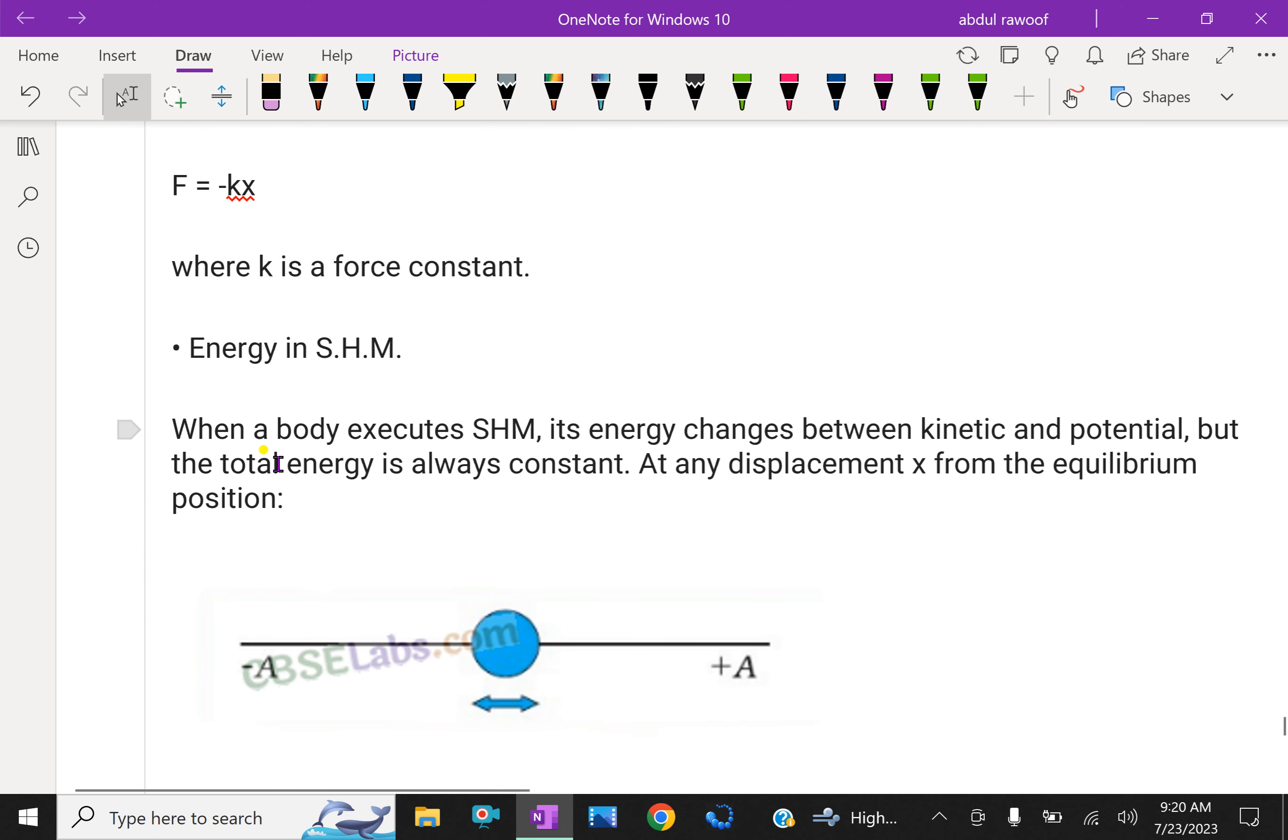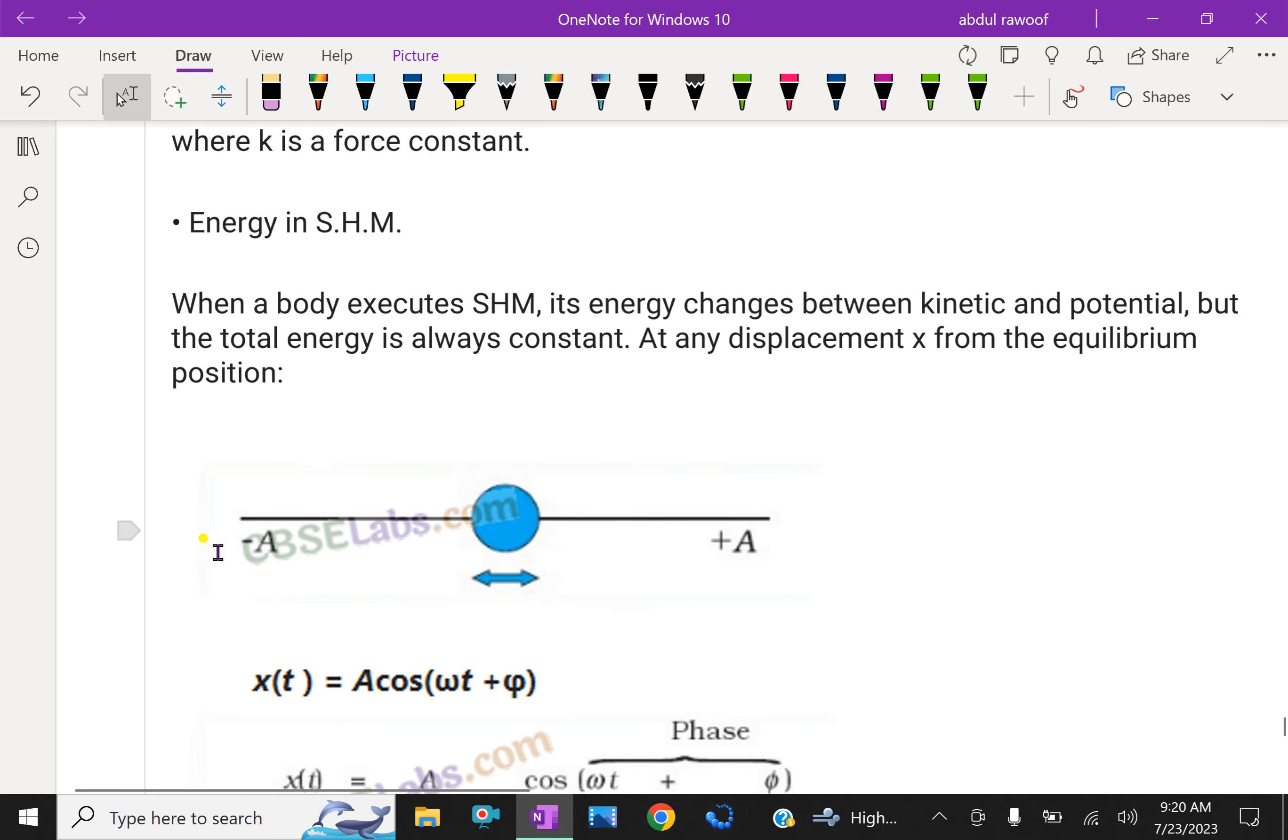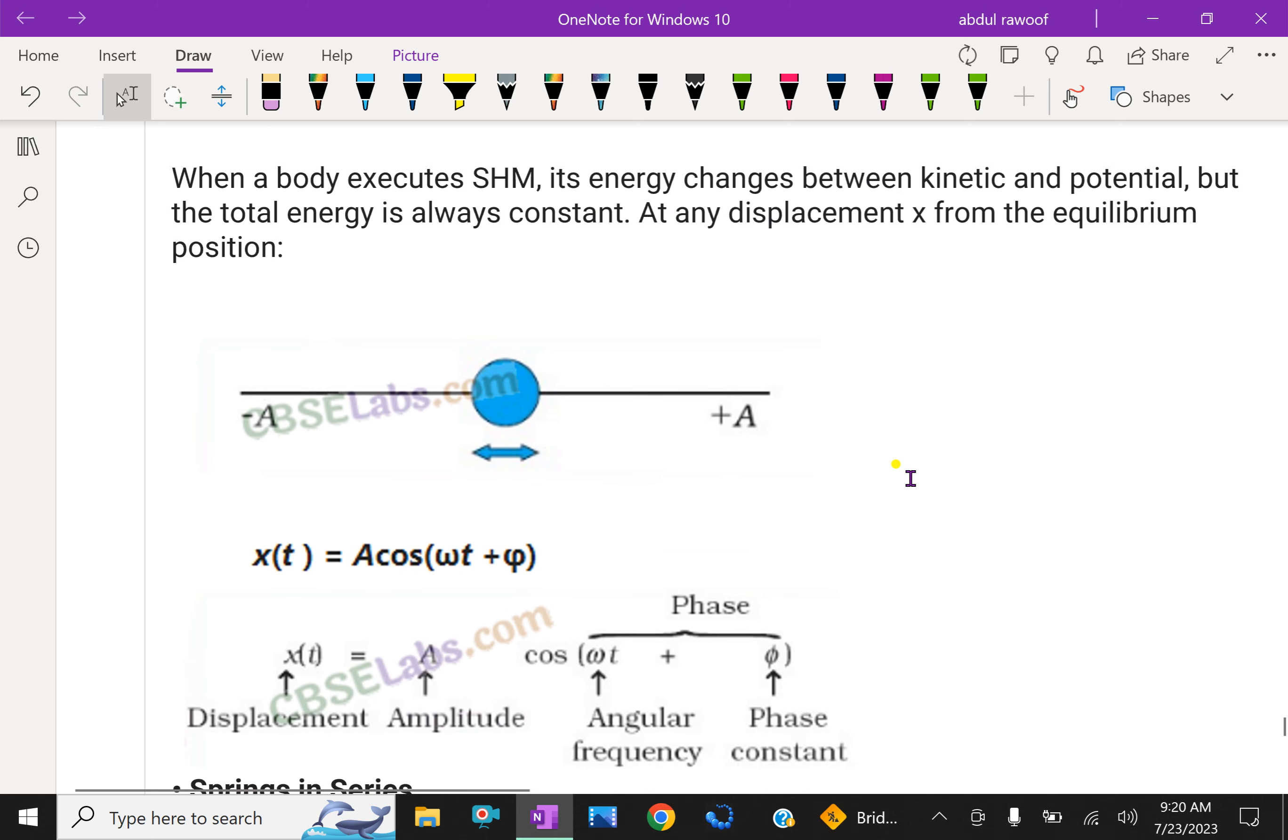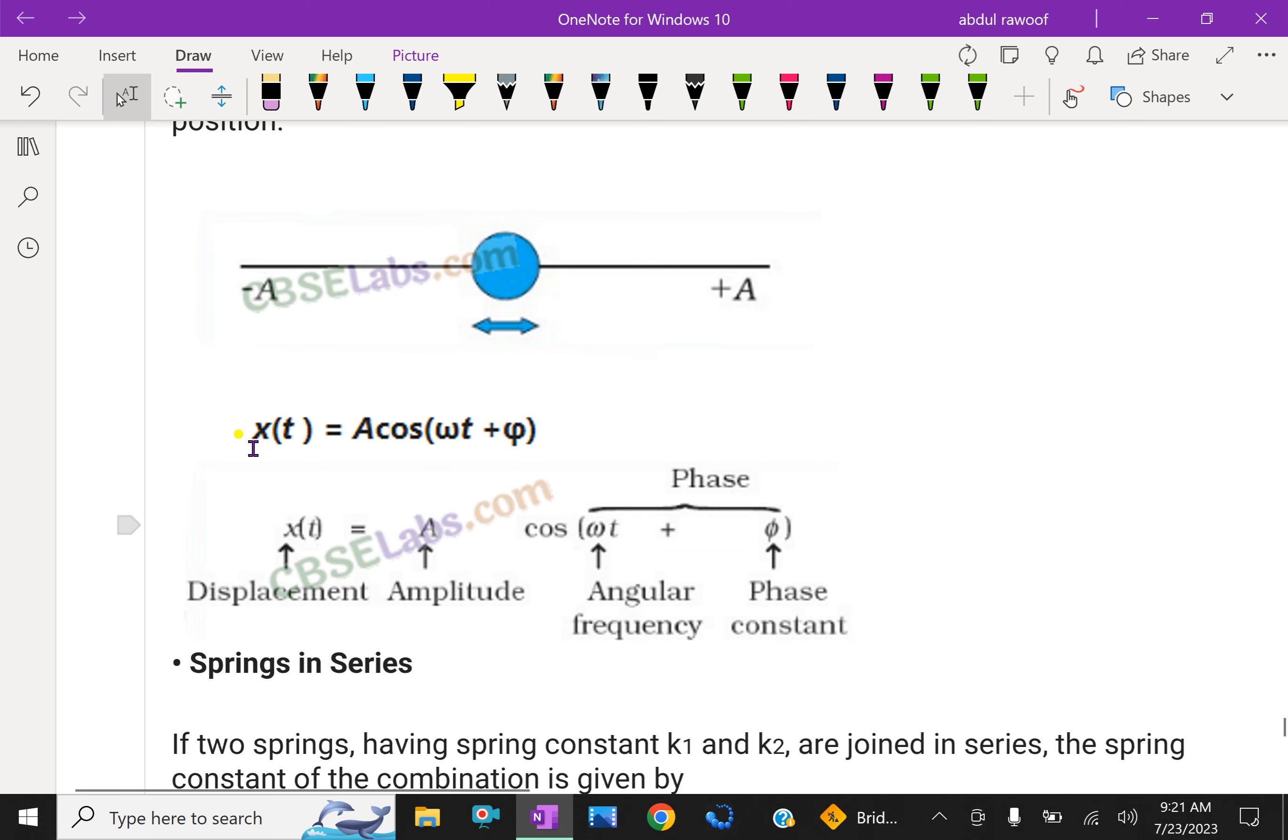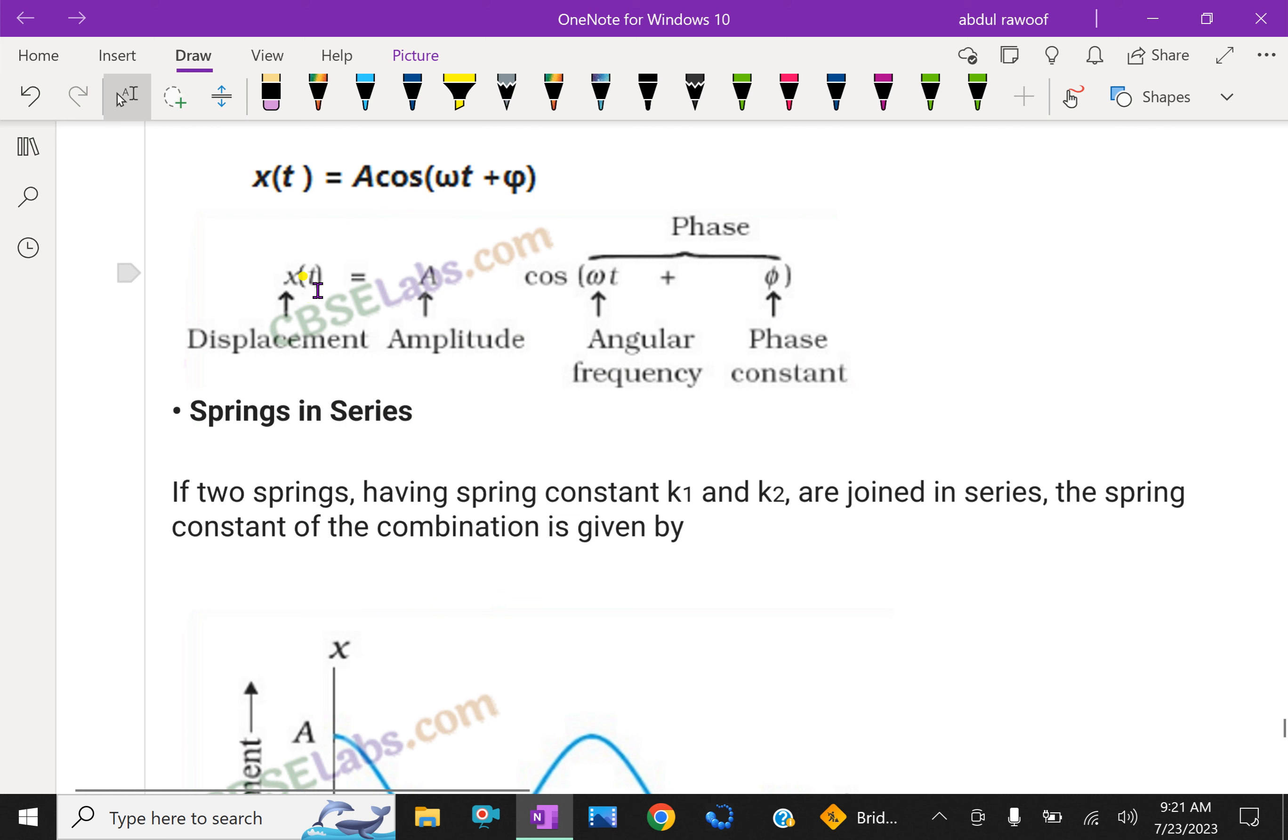Energy in SHM: When a body executes SHM, its energy changes between kinetic and potential, but the total energy is always constant. At any displacement x from the equilibrium position, that is the mean position, extreme left position, or extreme right position, x(t), that is a function of time, is A cos(ωt + φ). Here x(t) is displacement, A is amplitude, cos(ωt) is angular frequency, ωt is angular frequency, φ is phase constant, and ωt + φ is the phase.